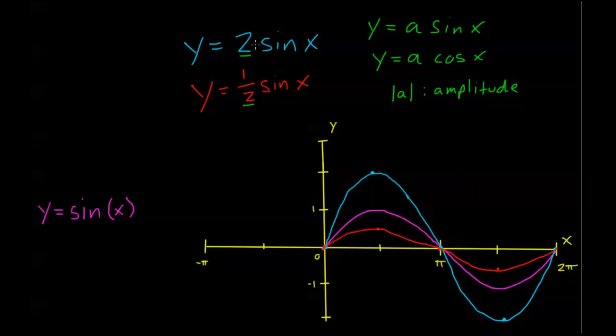So notice in this first graph, the one in blue, y equals 2 sine x. My amplitude, or absolute value of 2, is just 2. And 2 is the total distance, the total maximum distance that this graph is going to ever be away from its horizontal axis. You see, I go up to 2, and I go down to negative 2. So a total distance of 2 is the furthest I go.